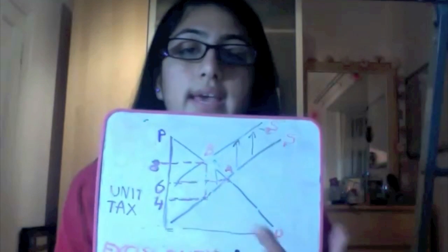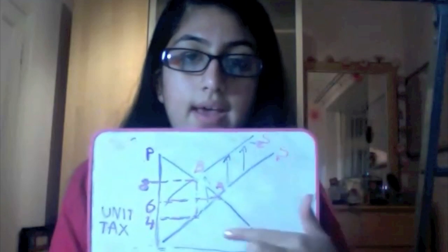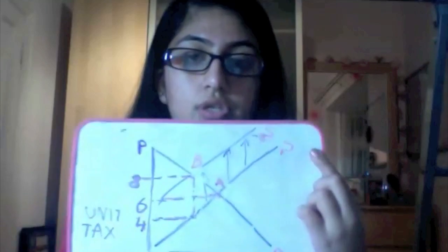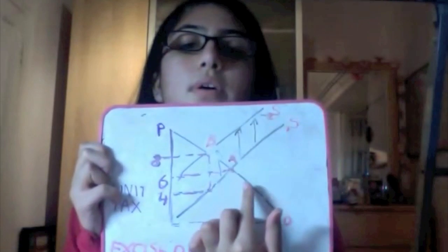Now let's look at a unit tax, excise duty, tax on alcohol. So now we have S1 here, our original, and D1 over here. And A is our original equilibrium.